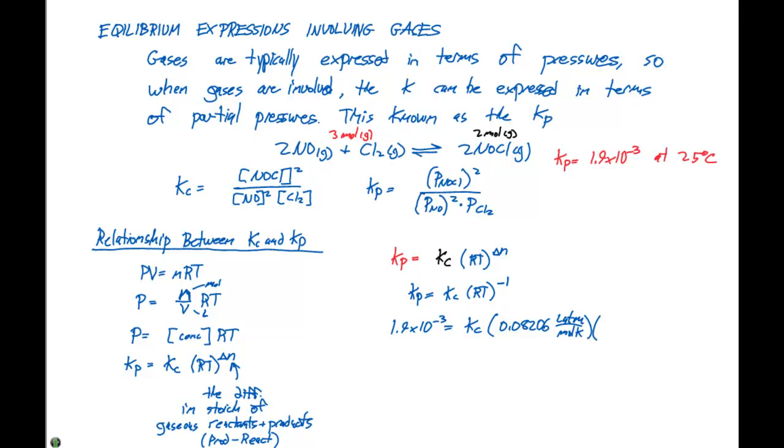So we have to use the 0.08206 liter atmospheres per mole Kelvin times the temperature, 25 degrees Celsius. We need to convert this to Kelvin or 298 K. And all of this right here is going to be raised to the minus 1 power, and our Kelvins here are going to cancel.